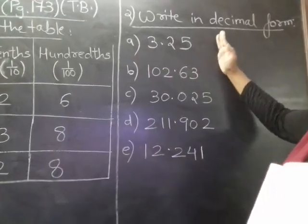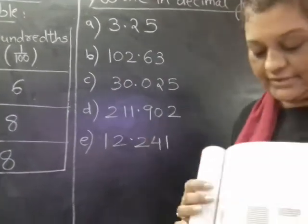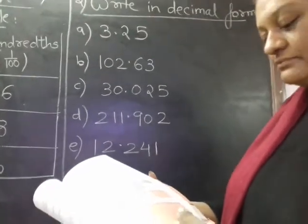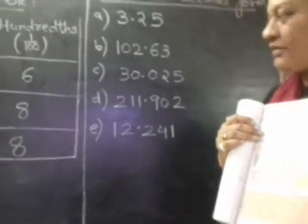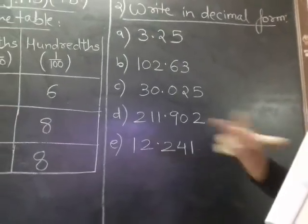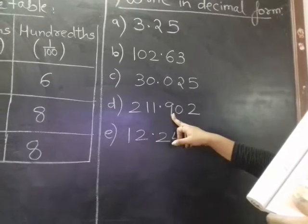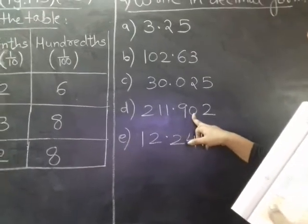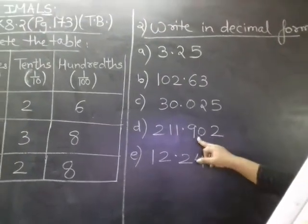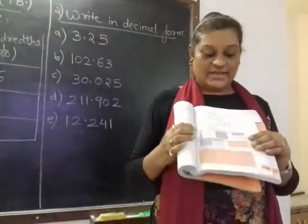The second number is 102.63. See, the last is given 0, so we will not write 0. The third, C is 30.025. D is 211.9, that is 9 is in the place value of tenths, that is 1 upon 10. Hundredths 1 upon 100 is 0 and 1 upon 1000, thousandths, is 2. So 9, 0, 2. And the last is 12.241. Hopefully this is clear to you, we will continue later exercise 8.2.